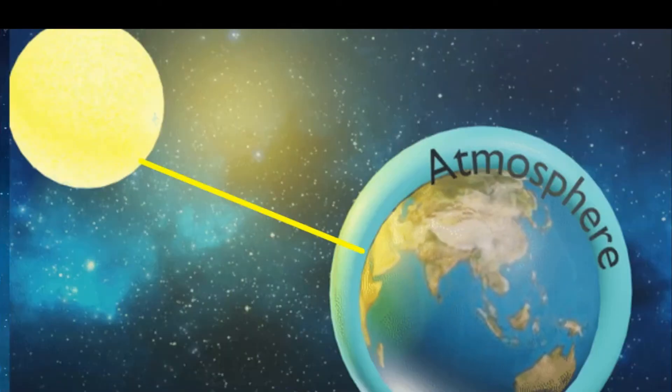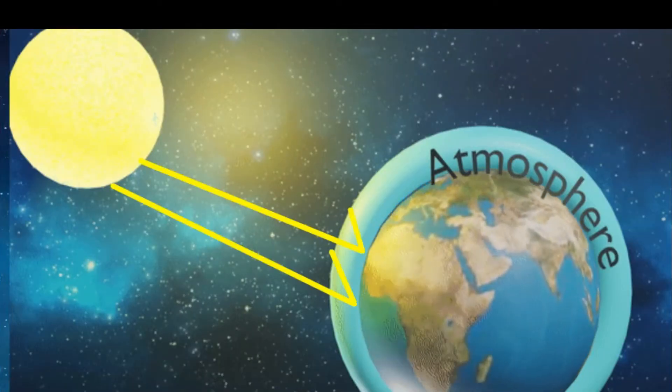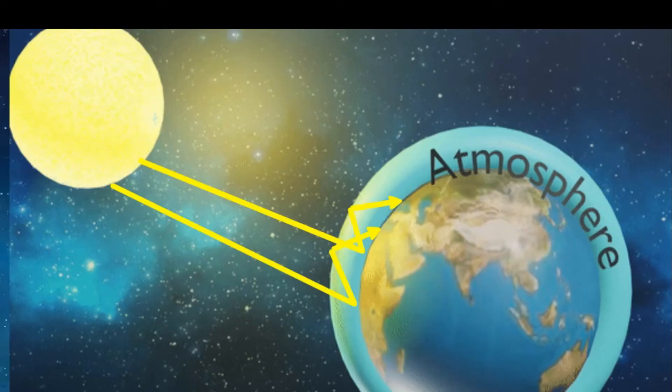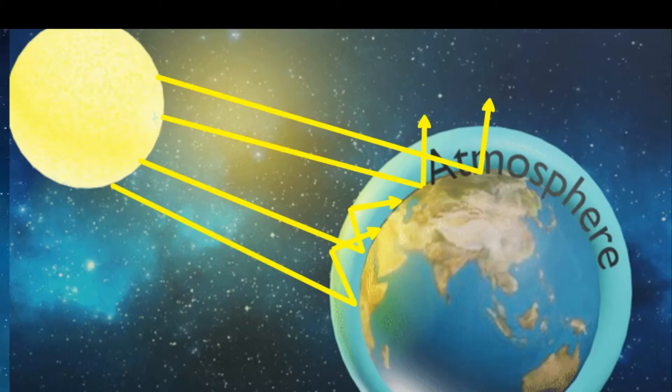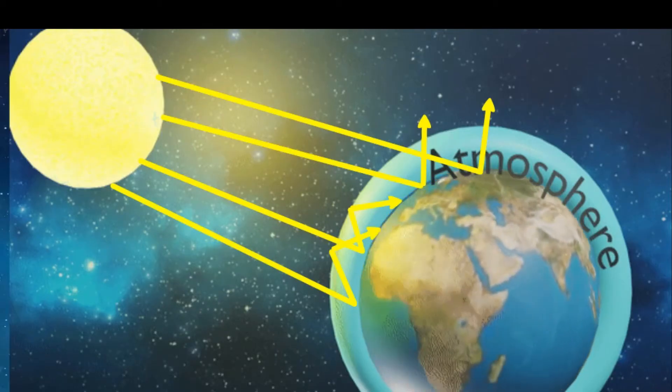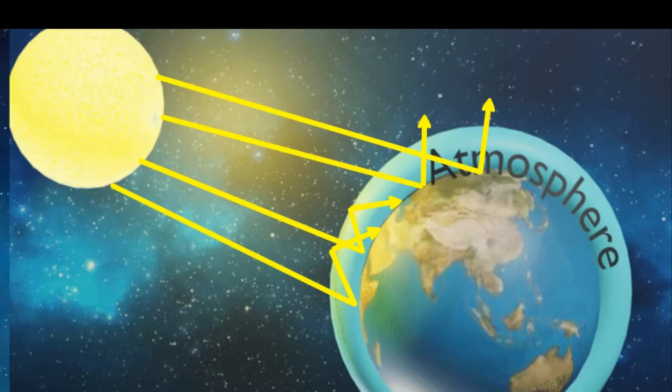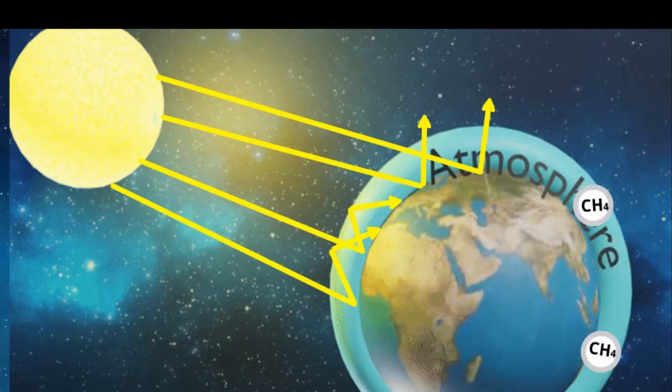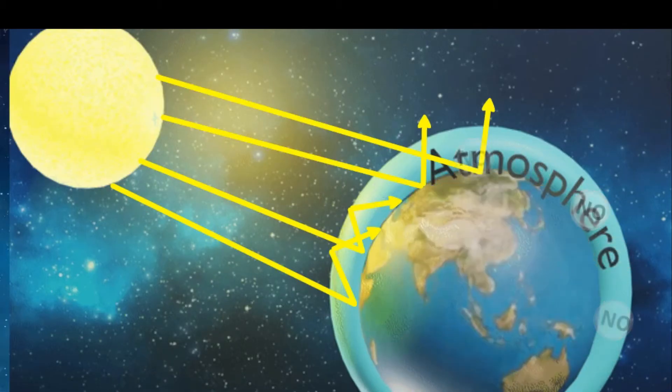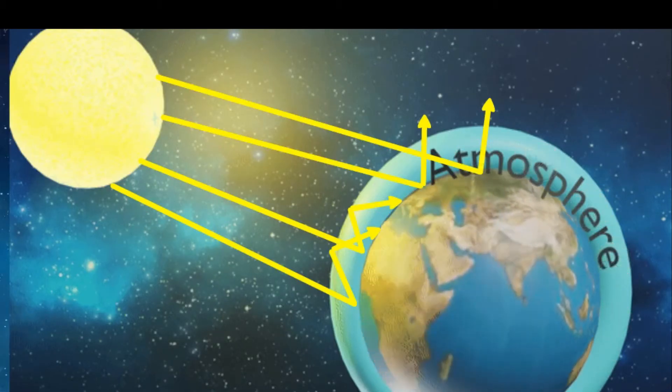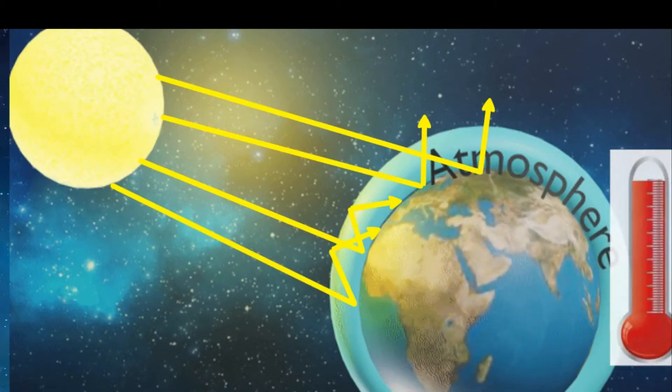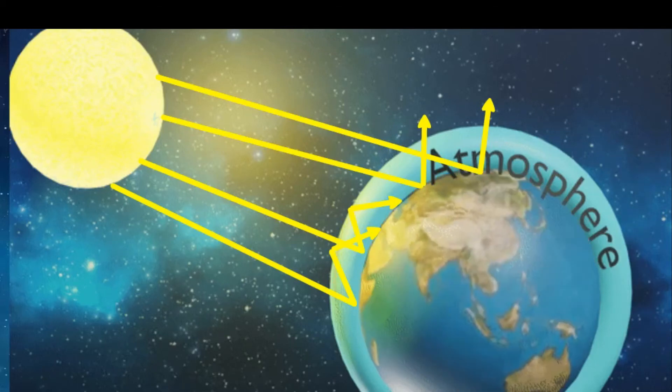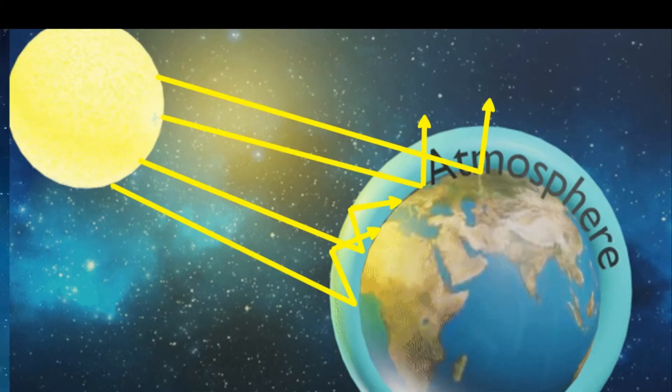When sunlight falls on the earth, a small part of it is absorbed by the earth and is converted to heat energy. A part of this heat energy is reflected by the earth back to the atmosphere. Some gases present in the atmosphere, for example carbon dioxide, methane, oxides of nitrogen, water vapors, etc., trap a part of the heat reflected by the earth causing increase in the atmospheric temperature. These gases are called greenhouse gases and the phenomenon is called greenhouse effect.